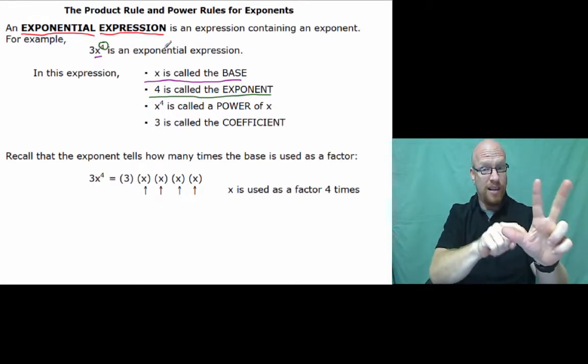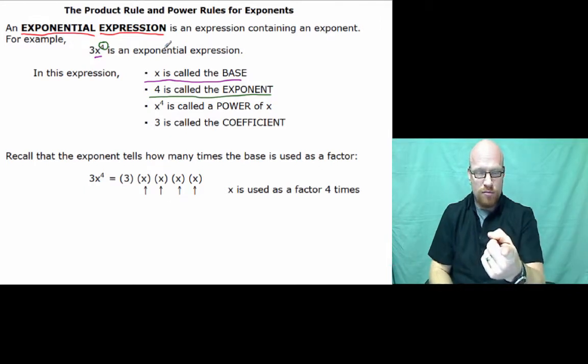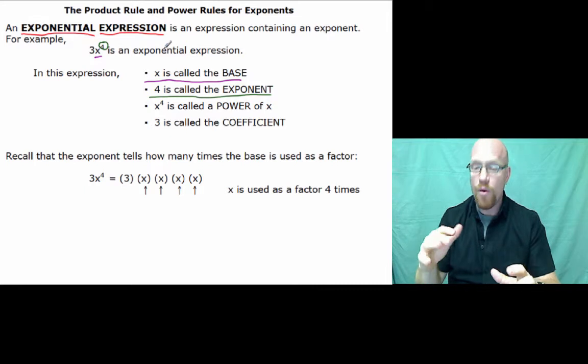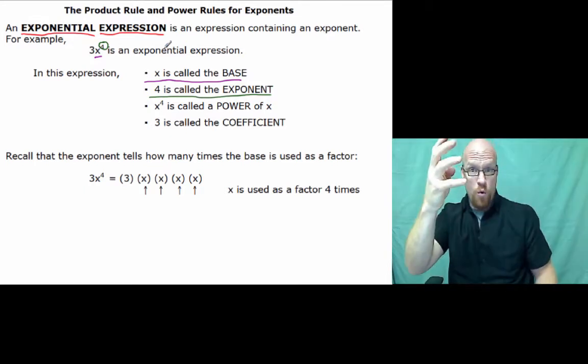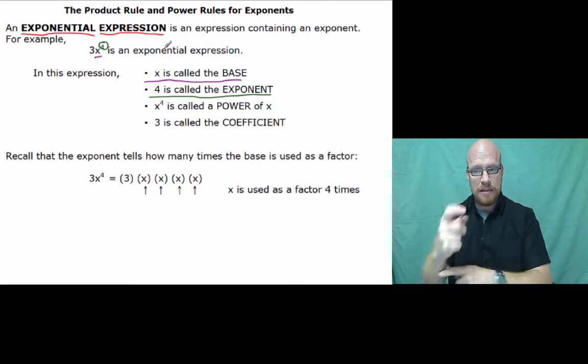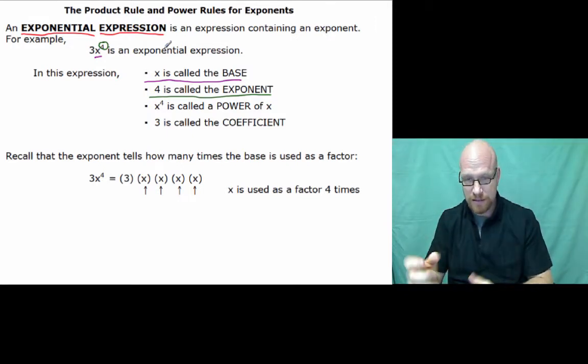Now the exponent has no effect on 3 because it's not written with parentheses as you'll see later. Right now 3X to the 4th power means 3 times X times X times X and then times X as you can see here in front of you.